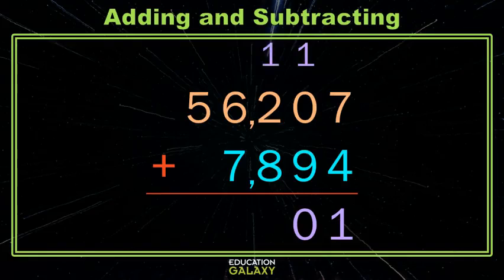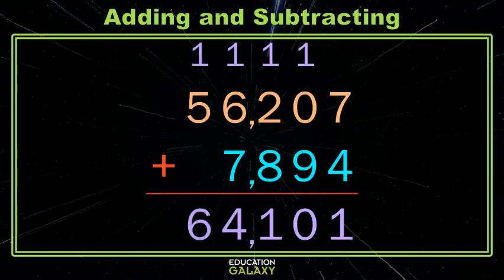Then we have two and eight, which is ten, with the one we carried, so that's eleven. So we take one here and we give one to the neighbors. And then we have six and seven is thirteen, plus the one we carried, so that's fourteen. We can leave the four here, but we have to carry a one to the neighbors. Now we just have one and five, which is six, and boom, we're done, just like that.